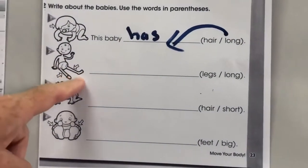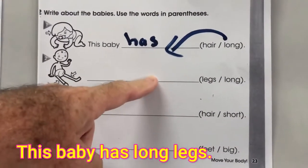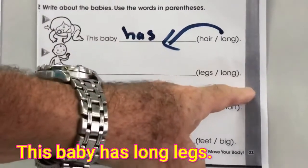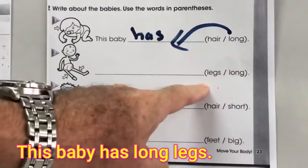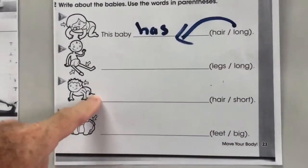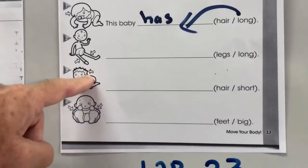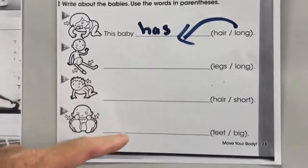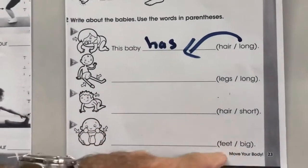This one, number two, this baby has long legs. Long before legs. And number three, short hair. Number four, big feet.